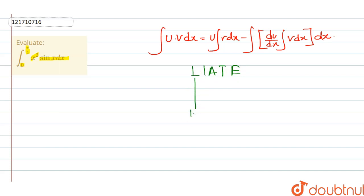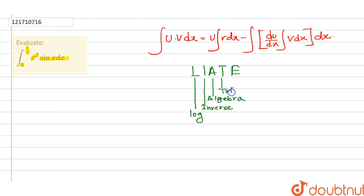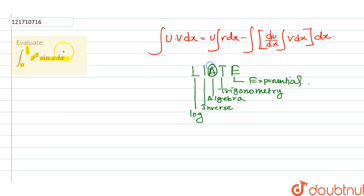The rule is LIATE: L for Logarithm, I for Inverse trigonometric, A for Algebraic, T for Trigonometric, and E for Exponential function. So x² is the algebraic term and sin x is the trigonometric term.